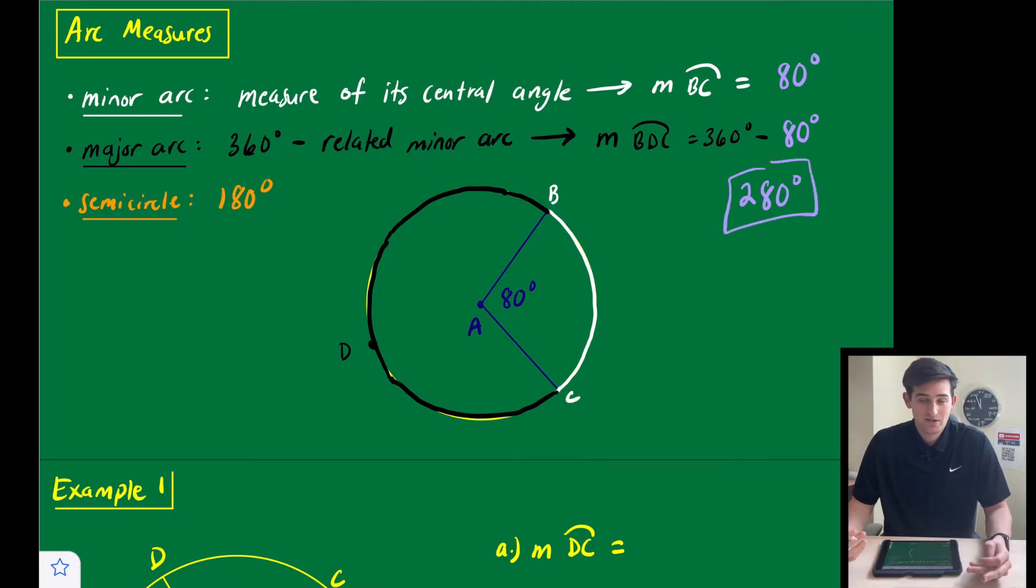And then lastly, the semicircle is just half of a circle, so it's 180 degrees.